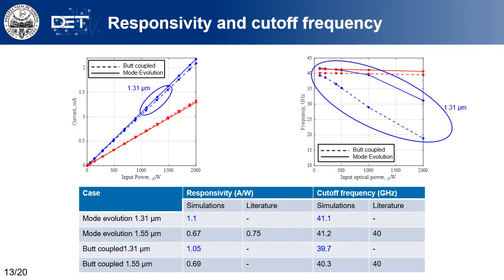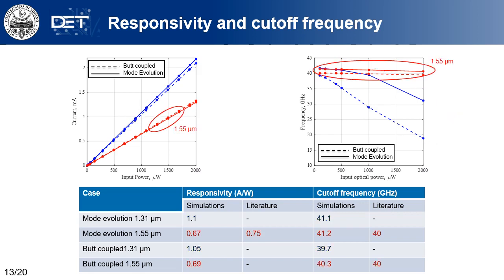At 1.31 micrometers, the responsivity is similar for the two configurations, but the back coupling responsivity is slightly lower than that of the mode evolution, probably due to the screening effect. The cutoff frequency matches the literature, but a strong dependence on input optical power is present for the back coupling case, since increasing power makes the screening effect more and more important. At 1.55 micrometers, the responsivity is practically equal for both configurations, and the dependence of the cutoff frequency on input optical power is not observed.